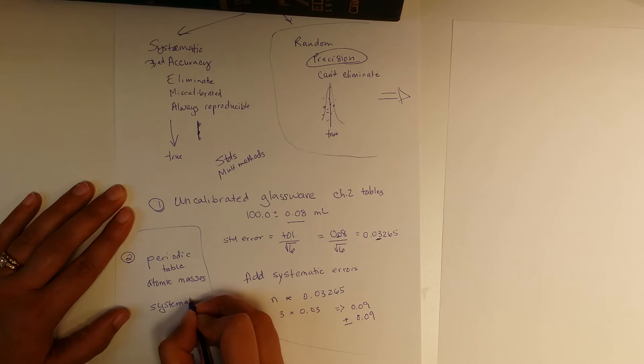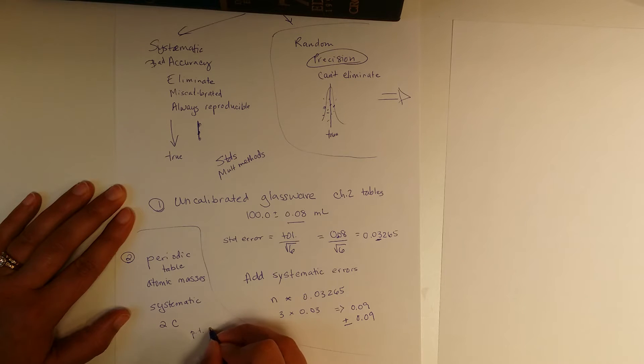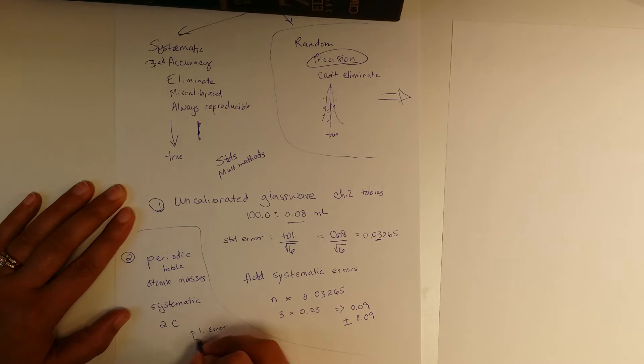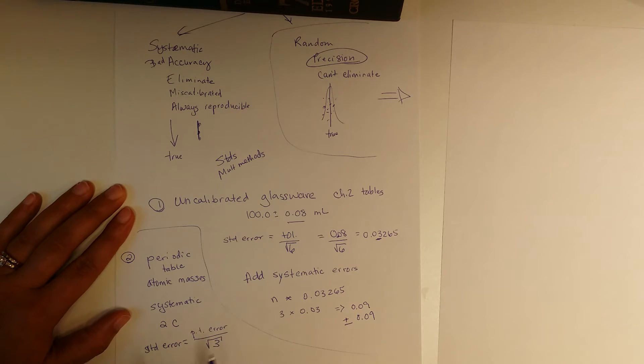At any time then that you are talking about one element, let's say we've got two carbon atoms, you're going to go to that periodic table error. I don't remember the exact number but whatever that is, that periodic table error, you also have to convert that by using the square root of three into what we would call our standard error. And then you would continue on. In this case because I have two of them, it's two times this converted error.